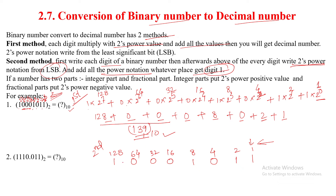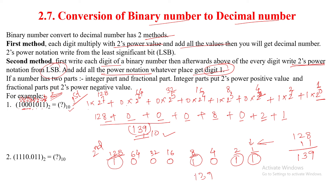Wherever the digit is 1: the 128 place has digit 1, then the 8 place, then the 2 place, and the 1 place. So add those power notation values: 1 + 2 = 3, 3 + 8 = 11, 11 + 128 = 139. The answer is 139 in the decimal number system. Both methods give the same answer, so you can follow whichever method is easier for you.